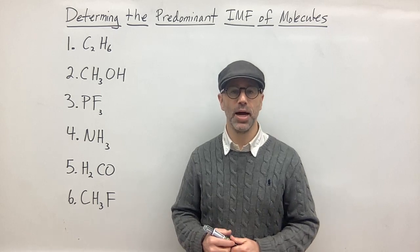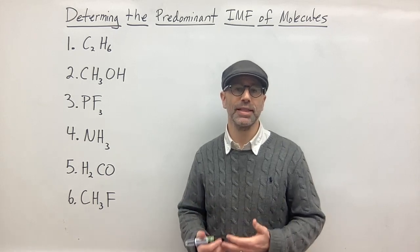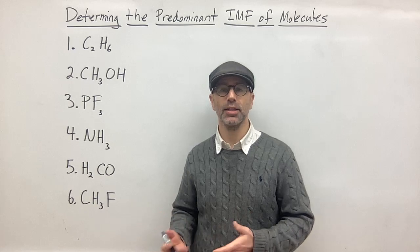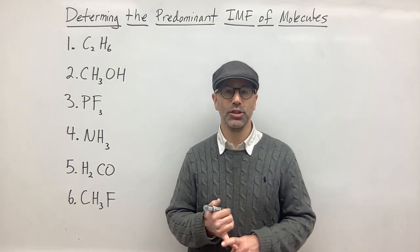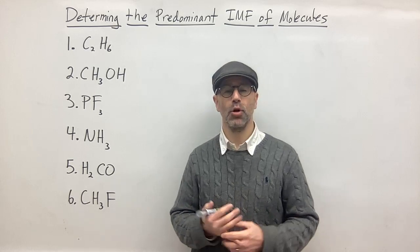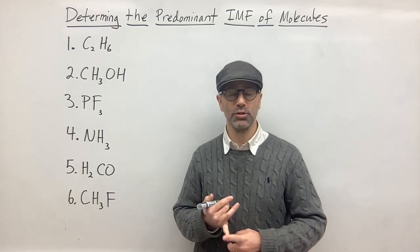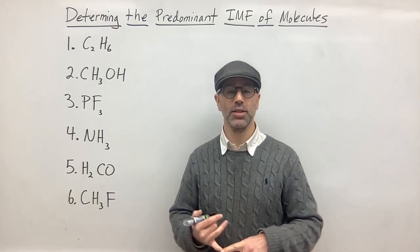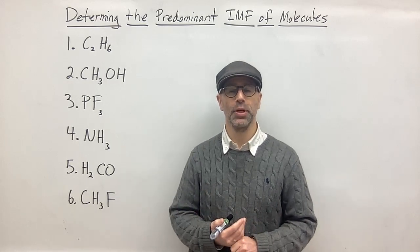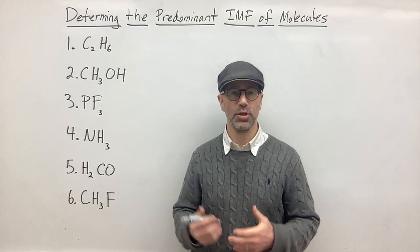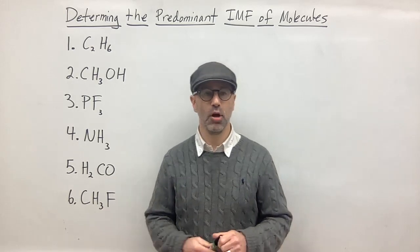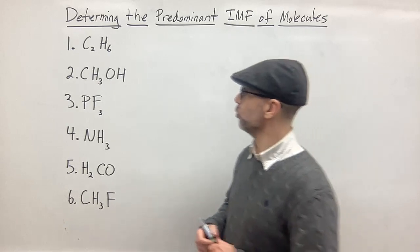And then of course you have hydrogen bonding, and that only happens if you have a hydrogen that's bonded to either oxygen, nitrogen, or fluorine, because those are the three most electronegative atoms on the periodic table and because they're so electronegative they have an especially strong dipole. So we call that hydrogen bonding between the molecules.